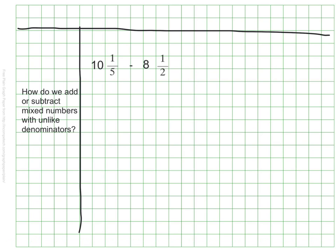Let's look at subtracting with the number sentence 10 and one-fifth minus 8 and one-half. We're going to complete this number sentence by finding the difference. Just as before, I'll start by converting the mixed numbers into improper fractions. So just like before, go ahead and pause the video and give yourself some time to calculate that as well.